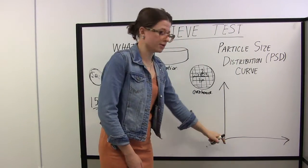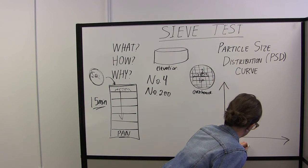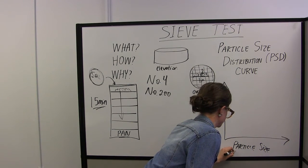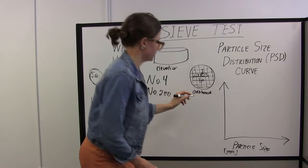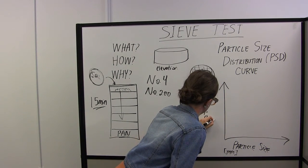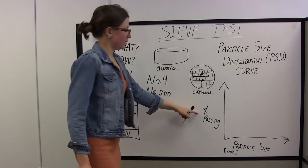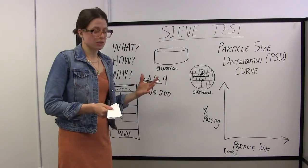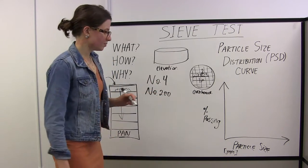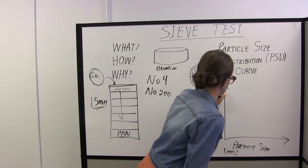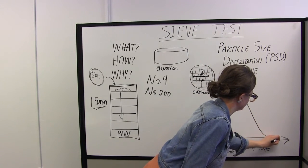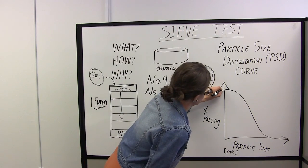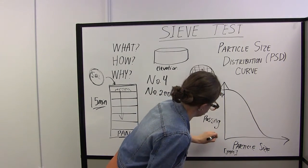On the x-axis down here is particle size, typically millimeters. And then on the y-axis here is percent passing. Basically what that means is for a given particle size there is a certain amount or certain percent of your soil specimen that's finer or smaller than that particle size. Typical PSD curves have this backwards S shape because we have larger particles here, smaller particle size down here. And because we're working with a percent we have a hundred percent here and zero percent down here.